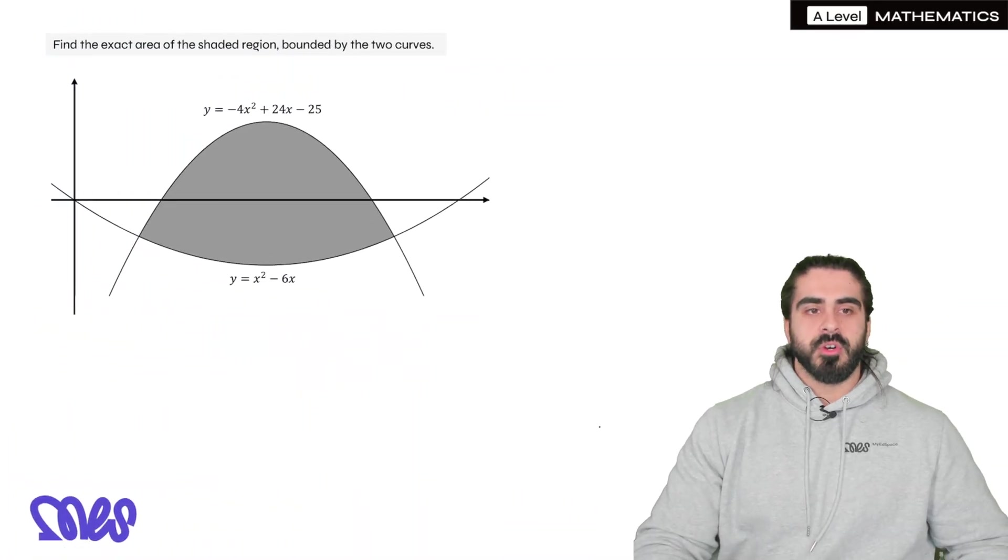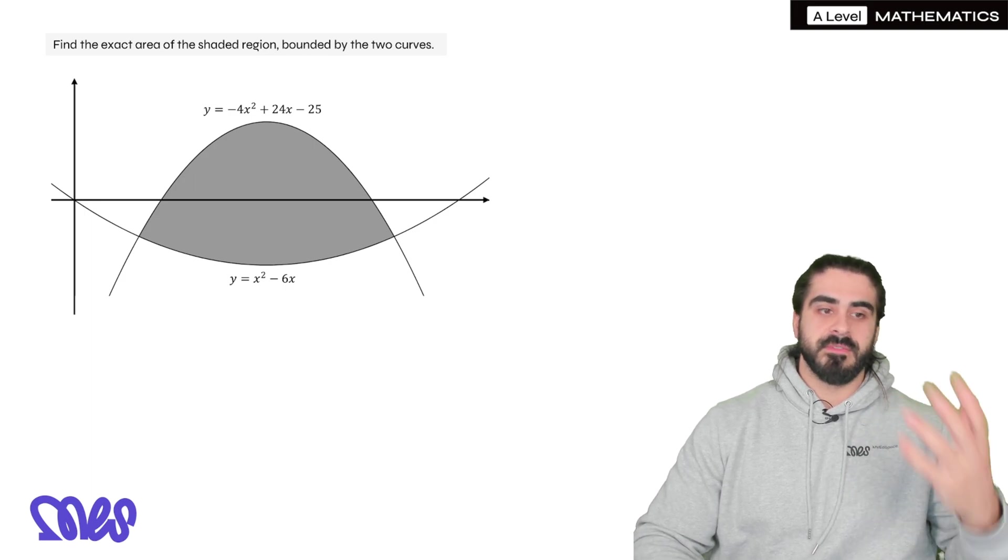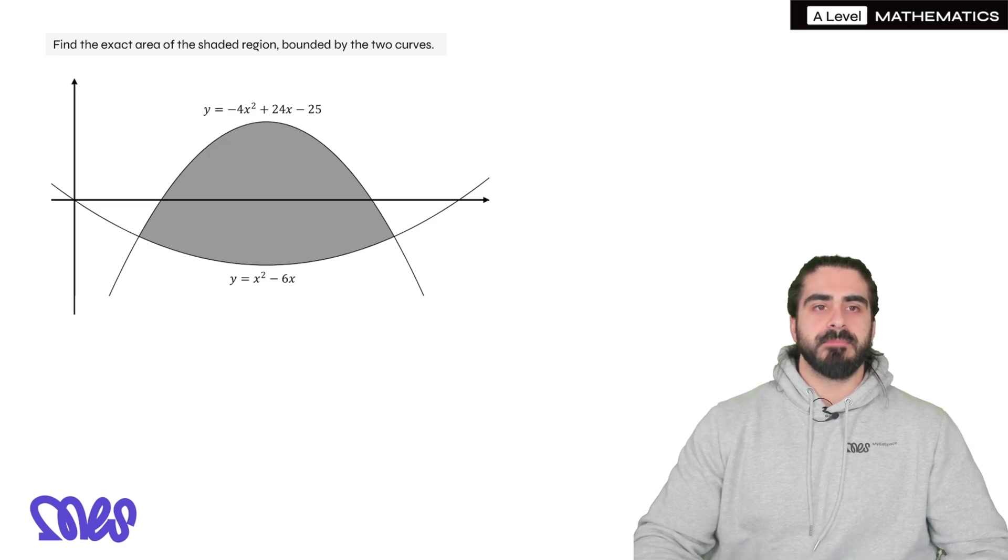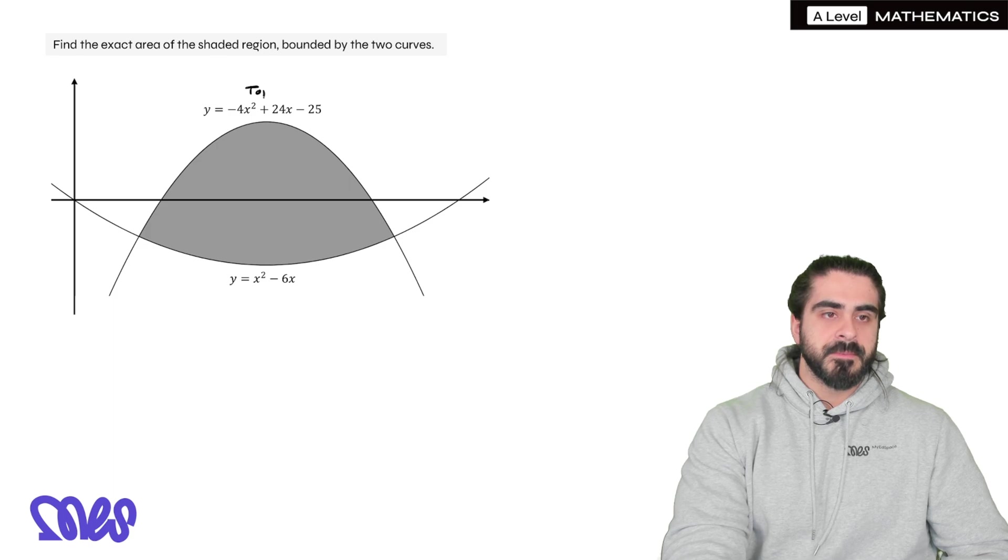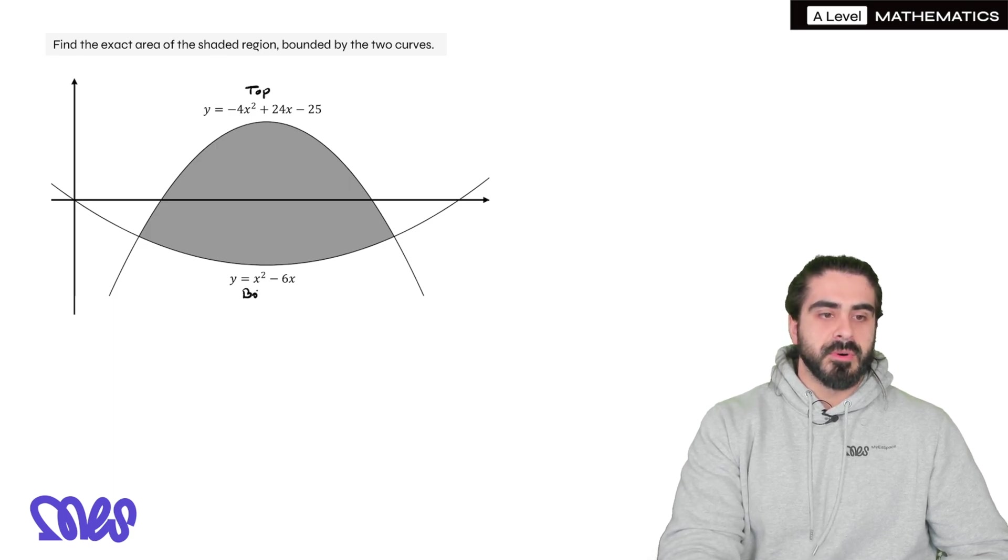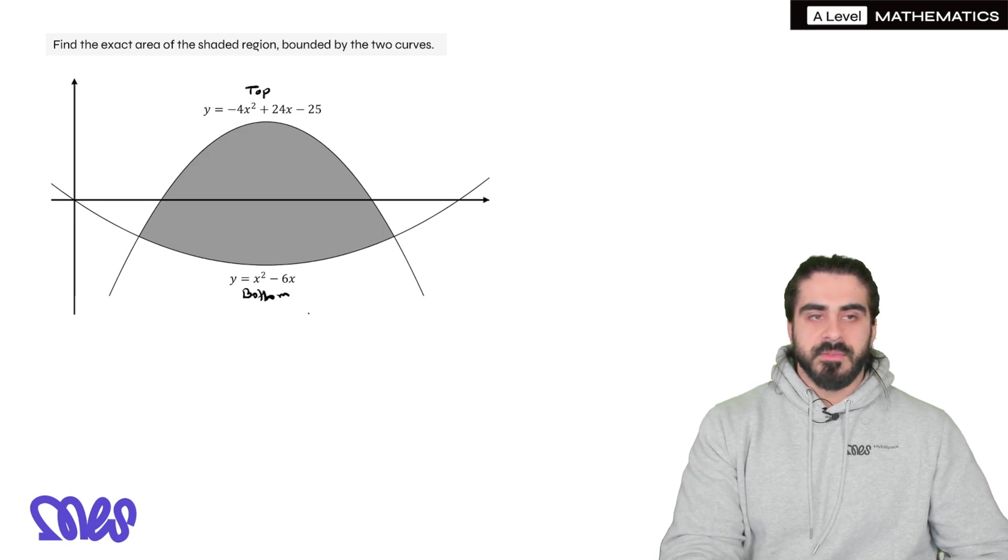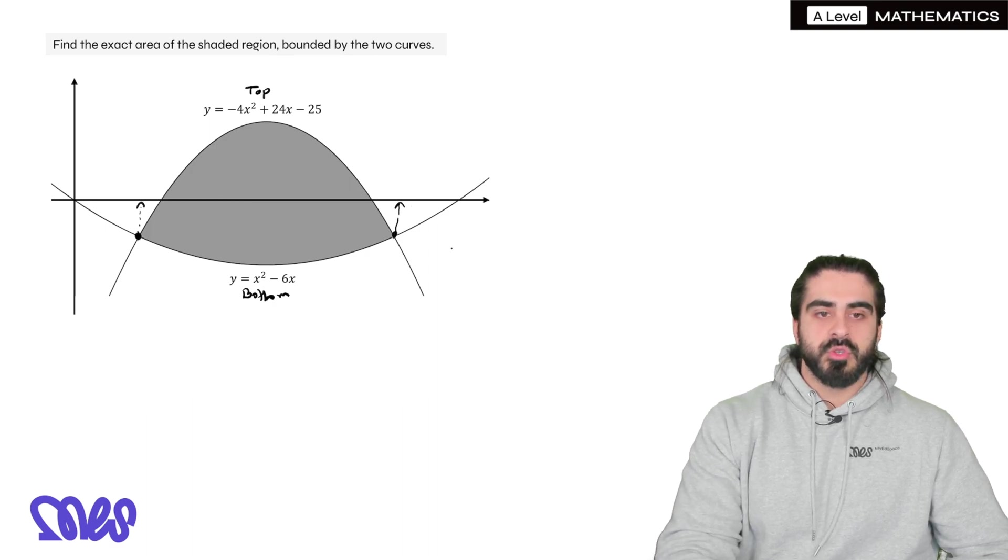Let's apply it to one question. So these are the actual functions in terms of the previous example. So let's do it properly. It says find the exact area of the shaded region bounded by the two curves. So we can see the curve on top here is this negative quadratic and the curve on the bottom is this positive quadratic.